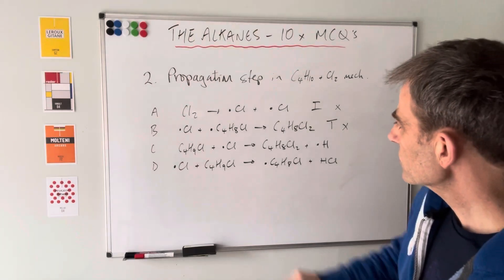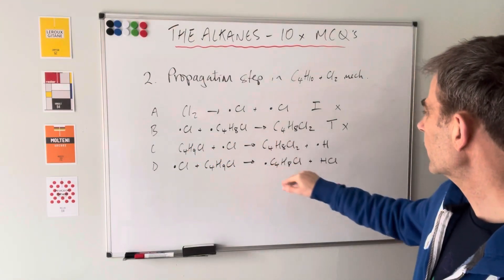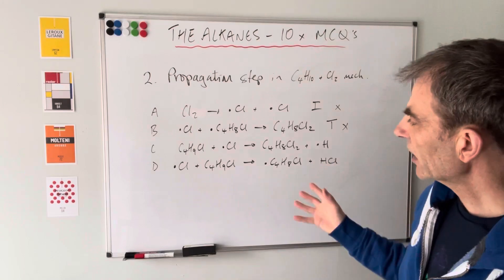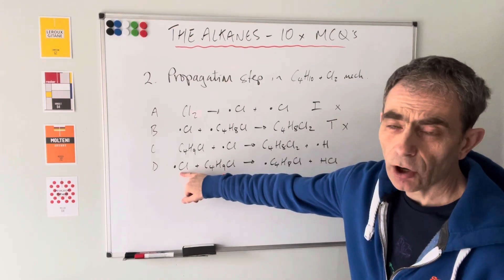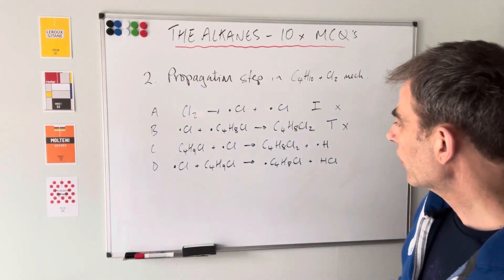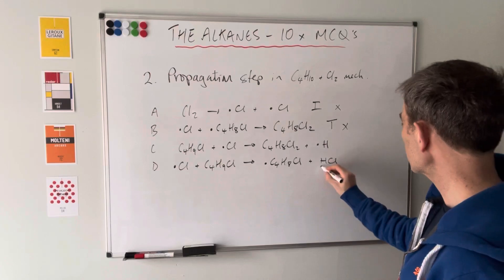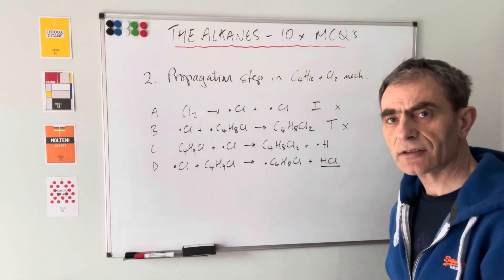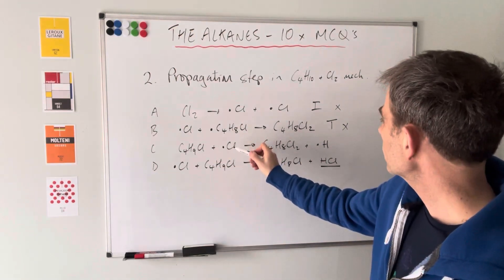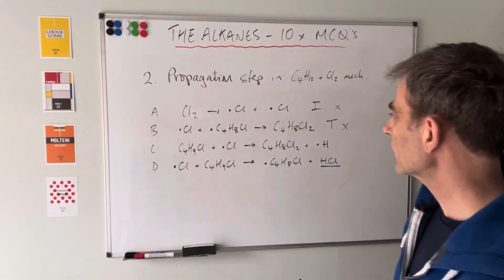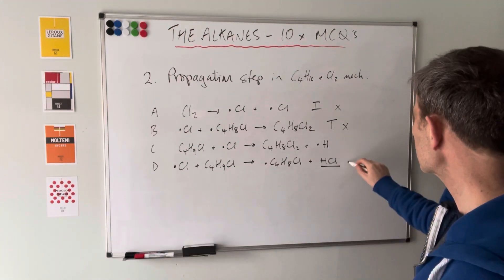The remaining options are in the format of a propagation step: a non-radical and a radical making a non-radical and a radical. What I always say to students is: a halogen radical will always strip a hydrogen out of the molecule it's reacting with. In option D, we've got HCl - that's the clue that it's the right answer. The other option doesn't work because the chlorine radical doesn't swap with one of those hydrogens; it actually stabilises itself and forms HCl.